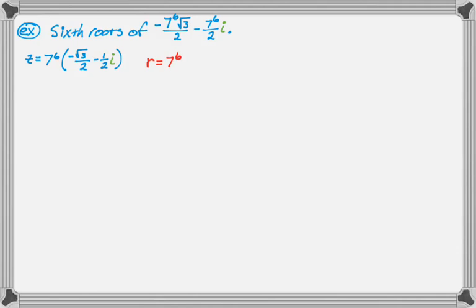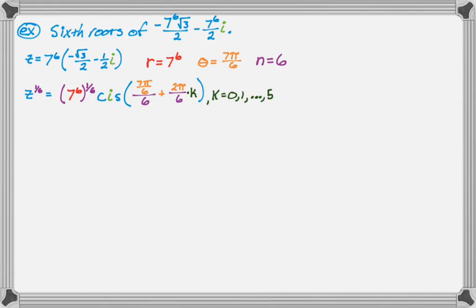It helps if you've done a lot of work with vectors too. From this, I can tell that r is equal to 7 to the 6th, which is a very big number that I don't really want to work out. Theta, I recognize, is 7π/6, because that's the point on the unit circle, negative radical 3 over 2, comma negative 1 half. And n is equal to 6, because we're doing 6 roots. So I am trying to find z to the 1 over 6, which will be r to the 1 over 6, cis(θ/6 + 2π/6 times k). And k can go from 0 to n minus 1, which is 5 in this case.